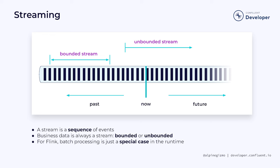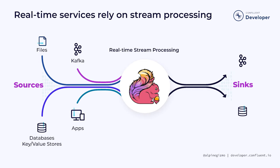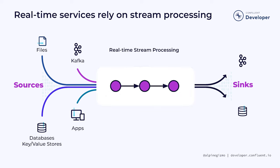But event streams can also be stored for later retrieval and reprocessing. Reprocessing a batch of historic data is just a special case of streaming where the stream is bounded by starting and ending timestamps. Flink applications consume data from one or more event sources and produce data to one or more sinks. These sources and sinks can be messaging systems such as Kafka, or files, or databases, or any service or application that produces and consumes data.